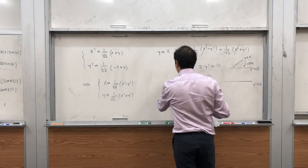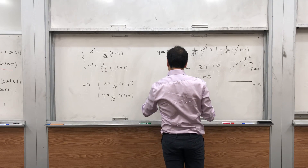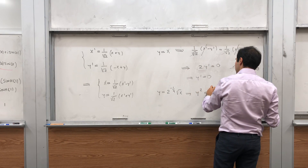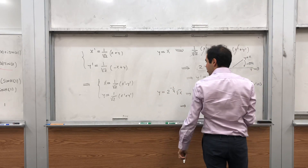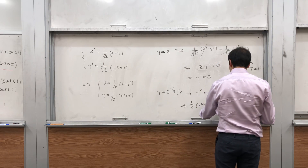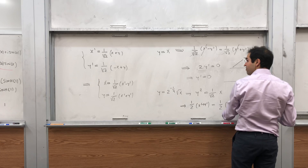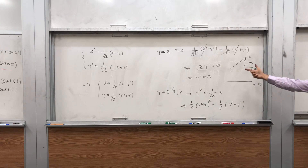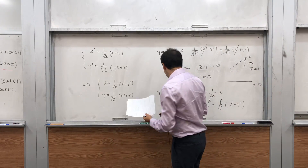Now let's see what happens to our function y equals 2 to the minus one-quarter square root of x. Squaring gives y squared equals x over square root of 2. Substituting y equals 1 over square root of 2 times (x prime plus y prime) and x equals 1 over square root of 2 times (x prime minus y prime), the left side becomes one-half times (x prime plus y prime) squared and the right side becomes one-half times (x prime minus y prime). This is exactly why we included the ugly factor of 2 to the minus one-quarter — to produce this simplification.